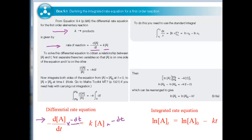If you multiply each side of the equation by minus dt and divide each side by the concentration of A, the dt's cancel out on the left-hand side and the concentration of A cancels out on the right-hand side. Minus times minus equals a plus, so you're left with d[A] over [A] equals minus k dt, which is what we have in the equation here.